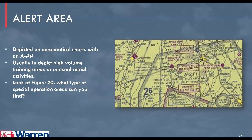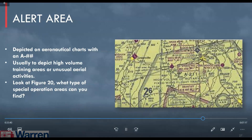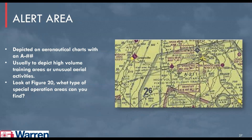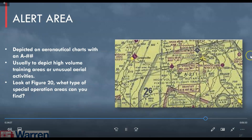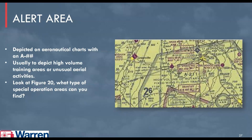An alert area is depicted on aeronautical charts with an A followed by numbers, usually indicating high-volume training areas or unusual aerial activities. Look at Figure 20 to find what types of special operation areas you can identify. When using your sectional charts and test supplement, it is really important to familiarize yourself with every sectional chart in your supplement — these are the only ones the FAA can test you on, since the supplement is what they refer you to during the test. There's no need to memorize every sectional chart in the U.S., but you do want to become familiar with what the various symbols mean.